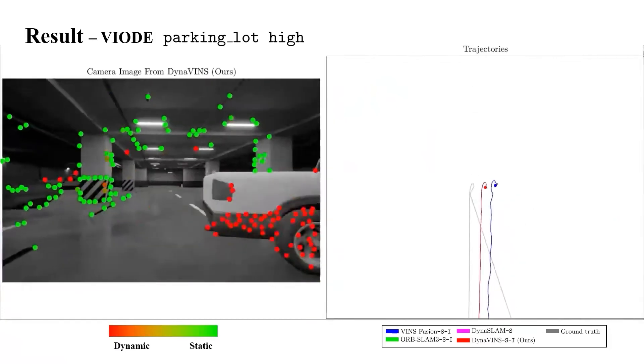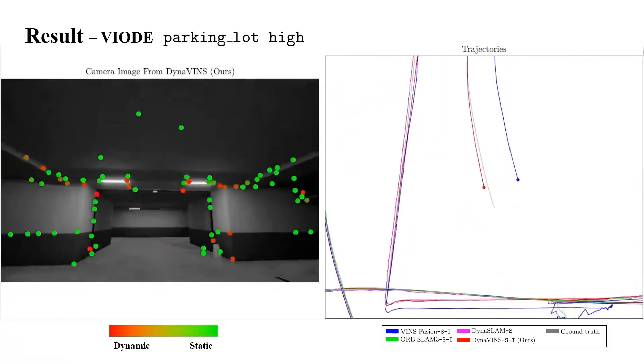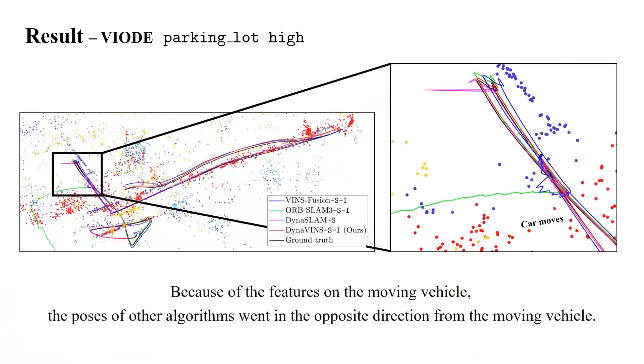Here, VIN's fusion is affected by a car again. As you can see in the figure, because of the features on the moving vehicle, the poses of other algorithms went in the opposite direction from the moving vehicle. Through the results from the VioD dataset, it can be confirmed that our proposed algorithm is robust to various dynamic objects.